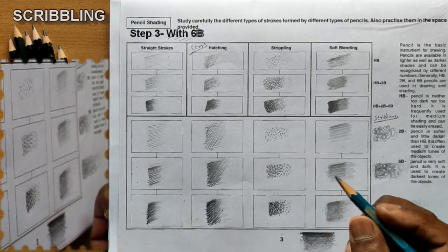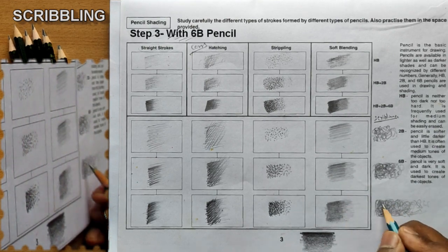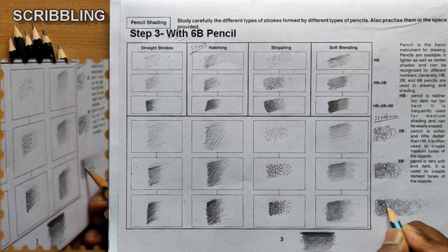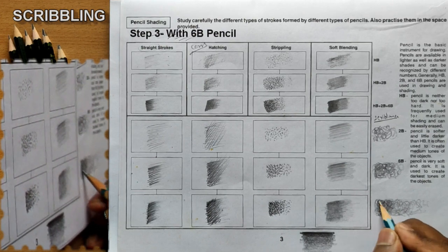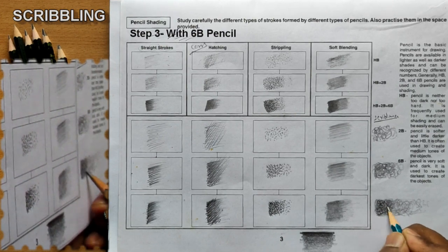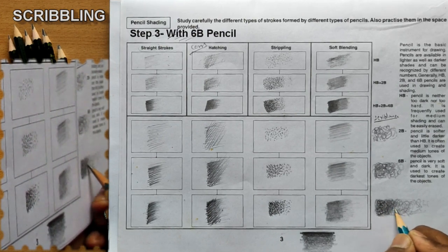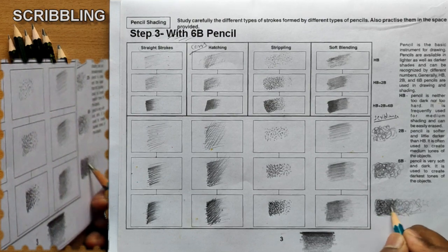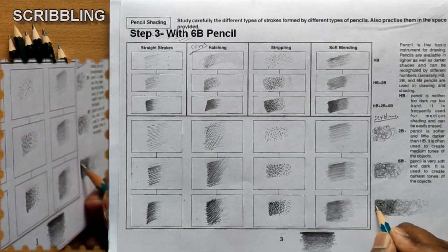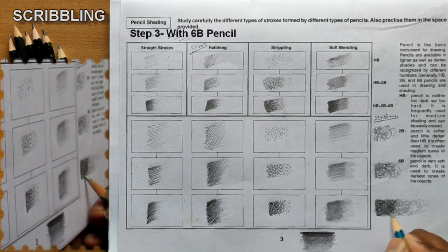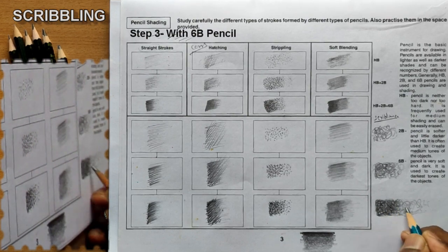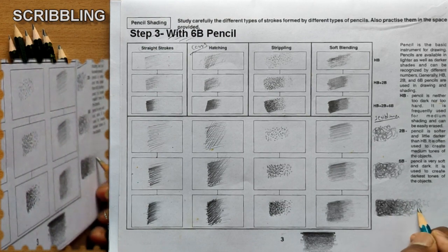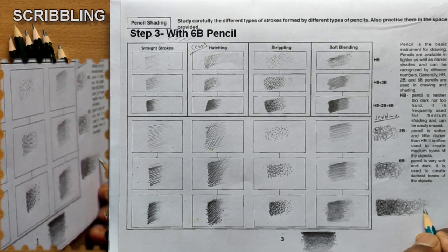Using a 6B pencil, move the pencil very closely. As you are using a 6B pencil you will get a darker shade. When moving towards the lighter side, increase the gap between those lines and reduce the pressure level.